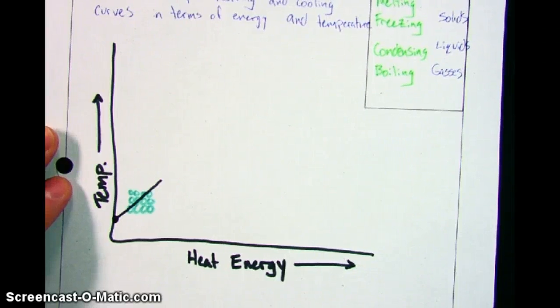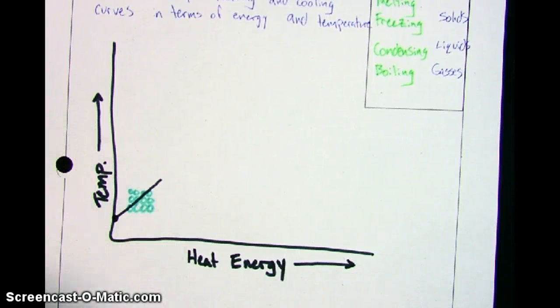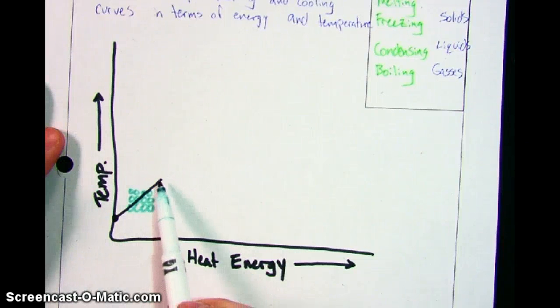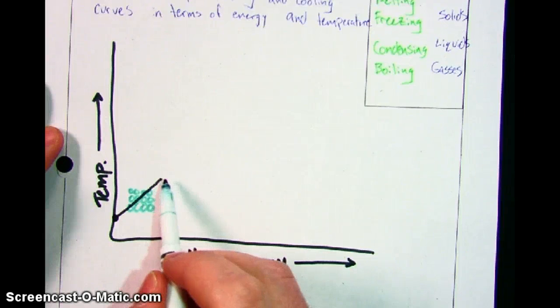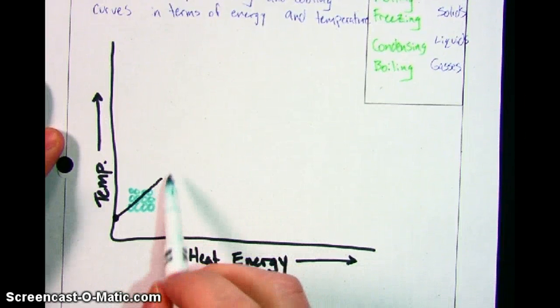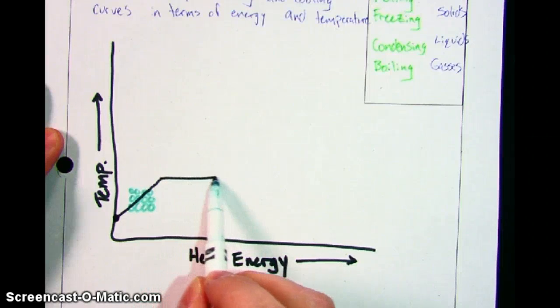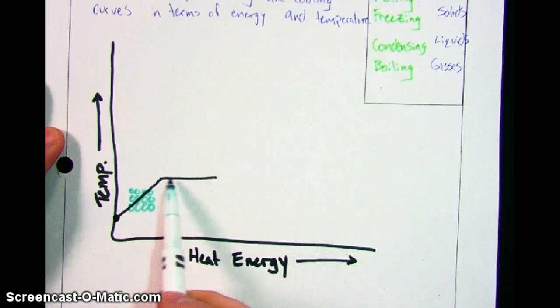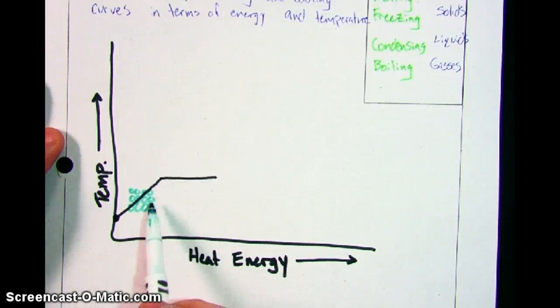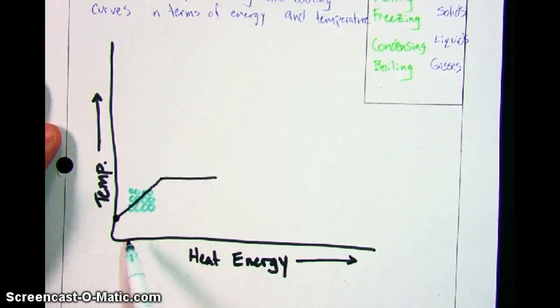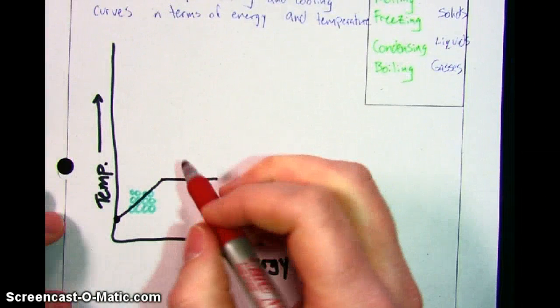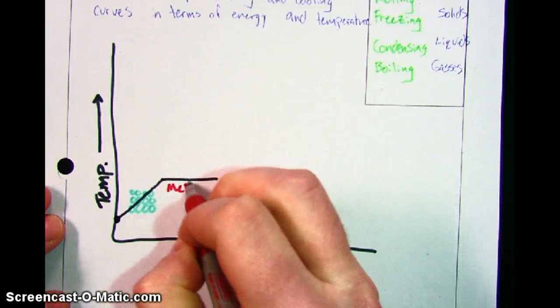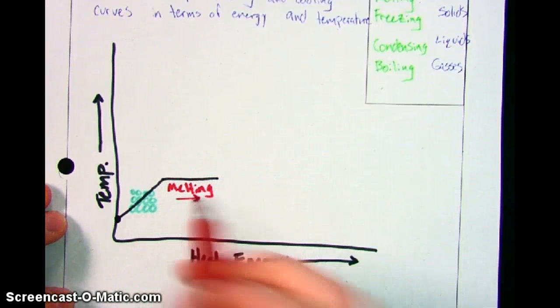Then the interesting part happens. There's a point at which the molecules are vibrating fast enough, their energy is high enough, where they start to have enough energy to finally break free of their neighbors. But this is a point where their temperature stops changing, too. We get this flat area on the graph. This is the point where they start melting. They start going from a solid to a liquid. At this point, we get a different color. This is melting as we go that way.